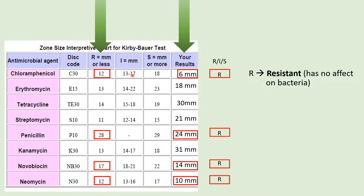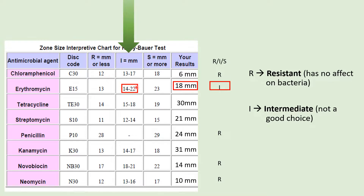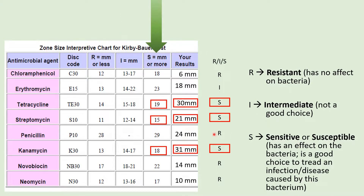For the intermediate zone, erythromycin gave 18 millimeters, which falls between 14 and 22 — it has some effect but not enough to be a good treatment choice. The remaining drugs — tetracycline, streptomycin, and kanamycin — have zone diameters greater than or equal to the S thresholds: 30 vs. 19, 21 vs. 15, and 31 vs. 18, respectively. These three drugs have a good effect on bacterial growth, meaning the bacteria is sensitive or susceptible to them, and they can be used to treat the patient's infection.